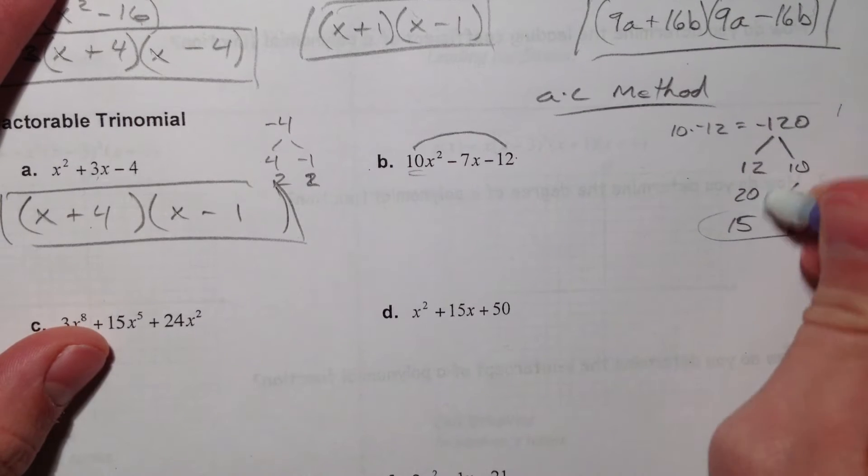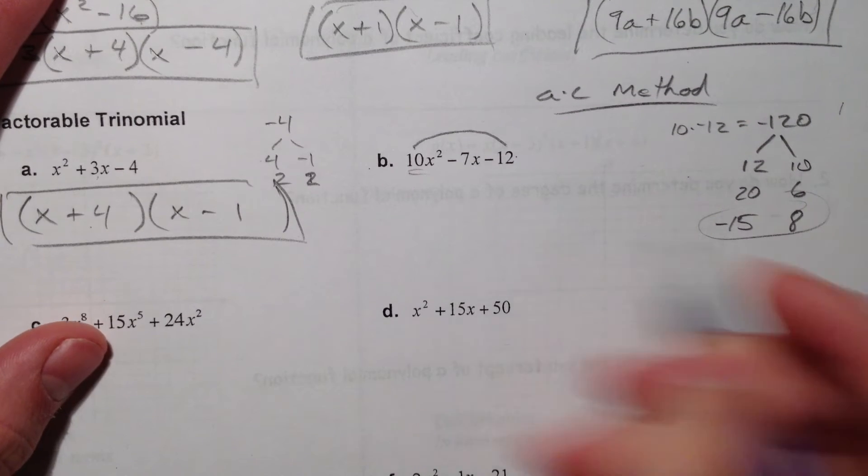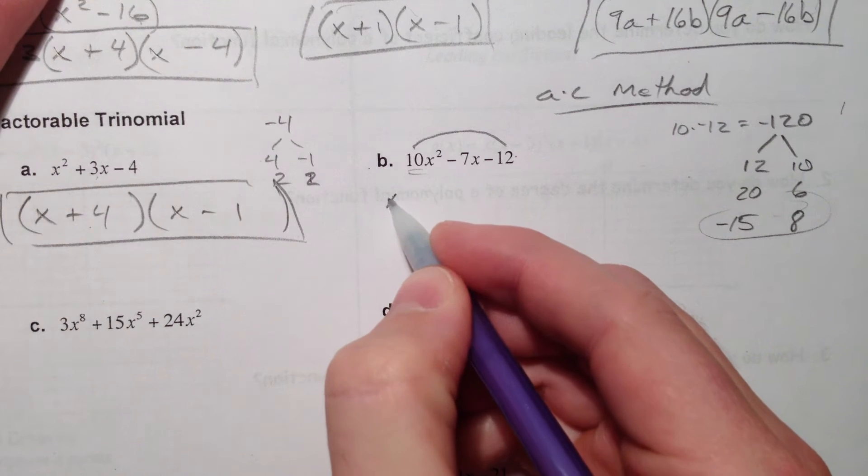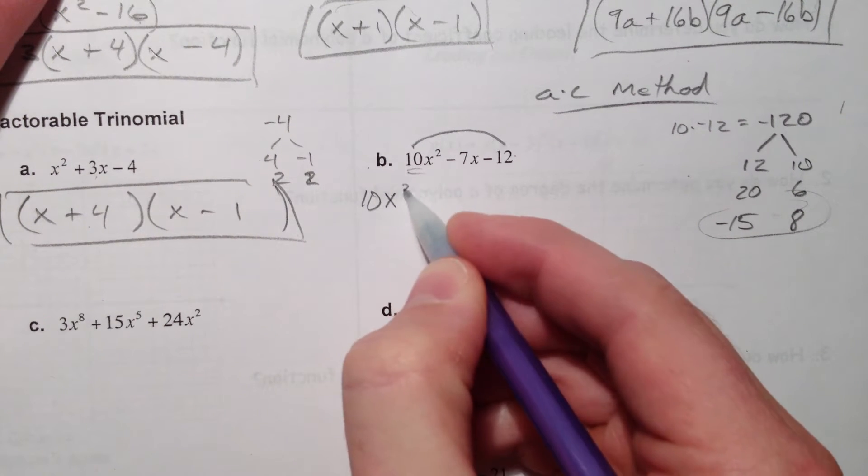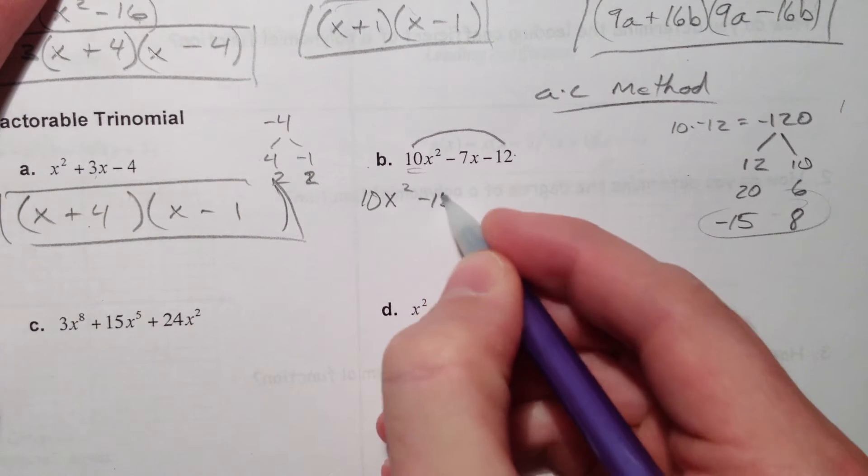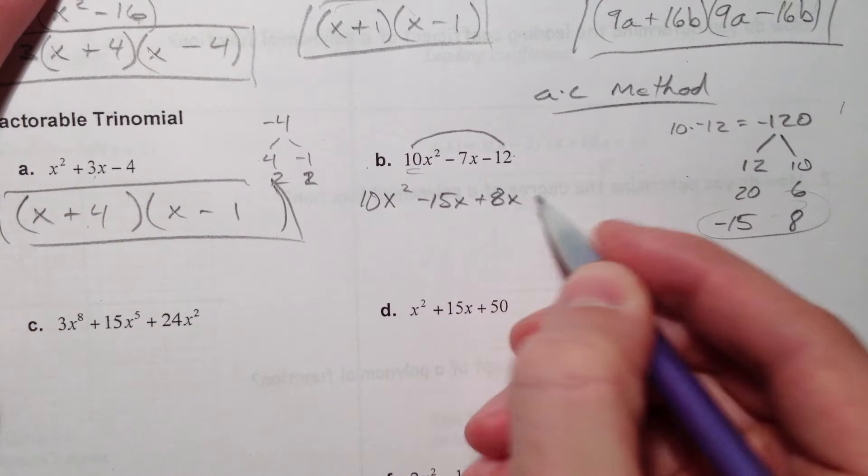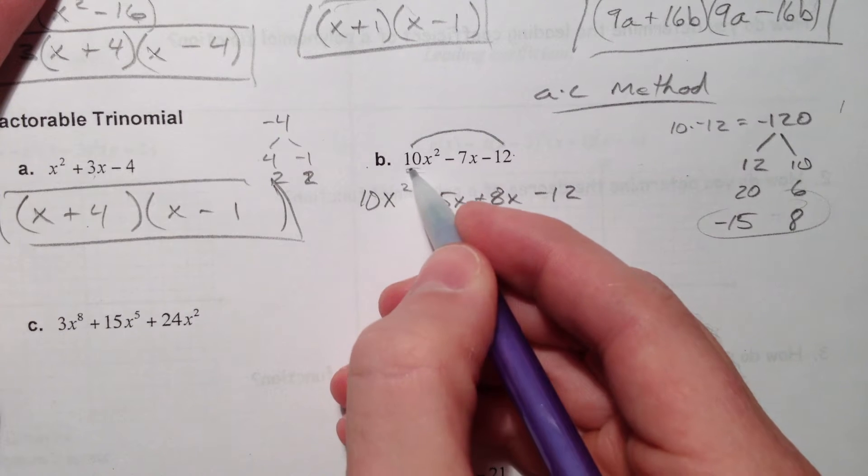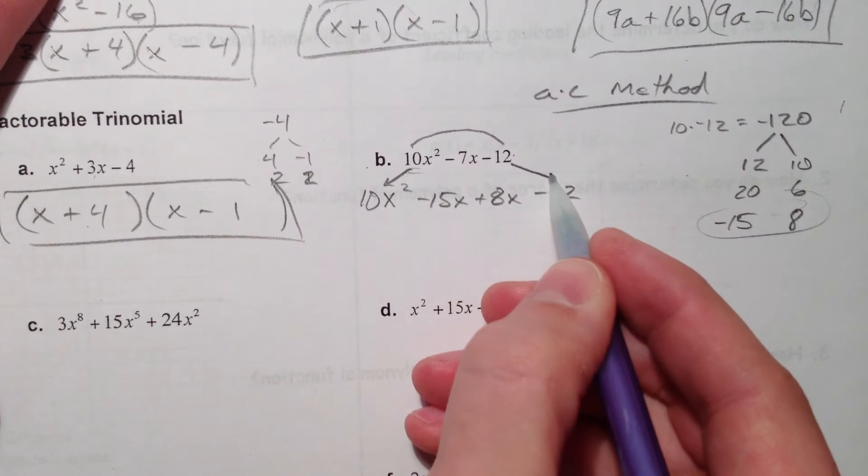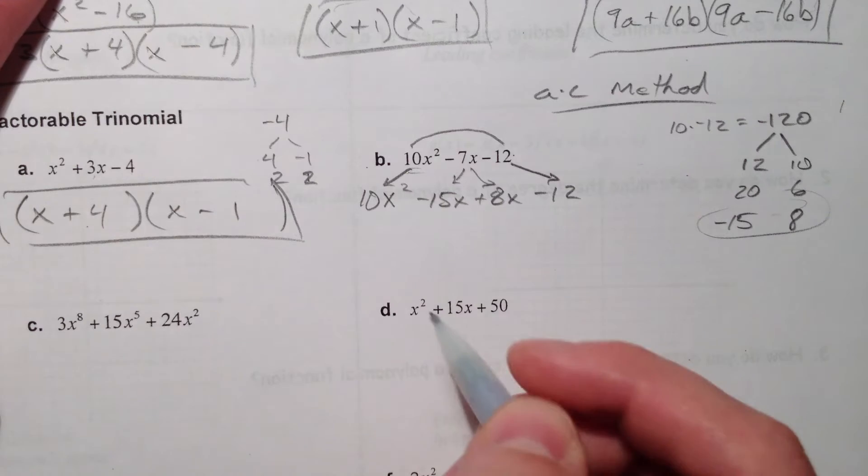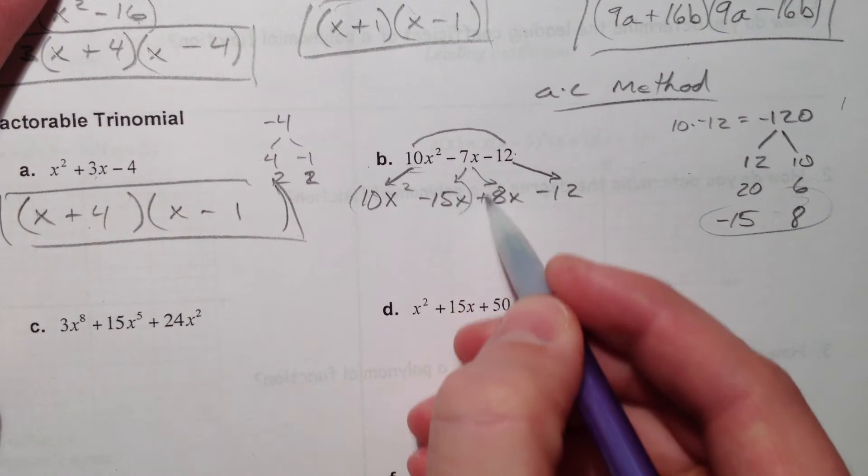So if we make it a negative 15 and a positive 8, I'm going to keep the last term the same. And split up - or, first and the last term stays the same. 10x² - 15x + 8x - 12. Notice that this goes down to here. This goes down to here. And then this just splits up into two terms. And then we're going to factor by grouping.